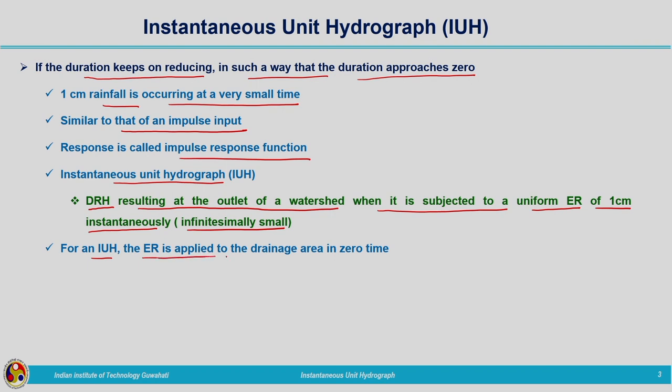For an IUH, the effective rainfall is applied to the drainage area in 0 time — 1 centimeter of effective rainfall applied at t = 0, for an infinitesimally small interval of time. But in the case of the unit hydrograph, 1 centimeter of rainfall is uniformly applied on the catchment for a specific duration D. That is the difference between these two. The unit hydrograph is the pulse response function, and the instantaneous unit hydrograph is the impulse response function. In the case of IUH, the input acts at t = 0 as an impulse — 1 centimeter of rainfall.